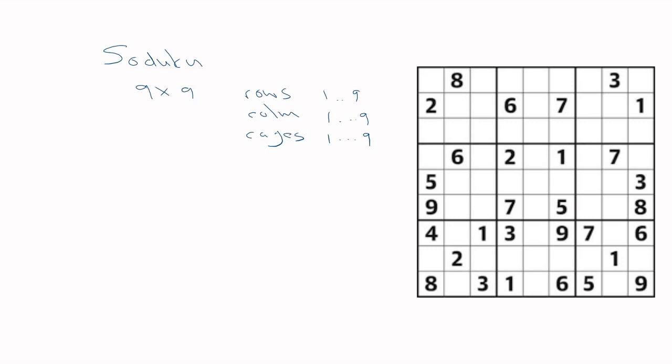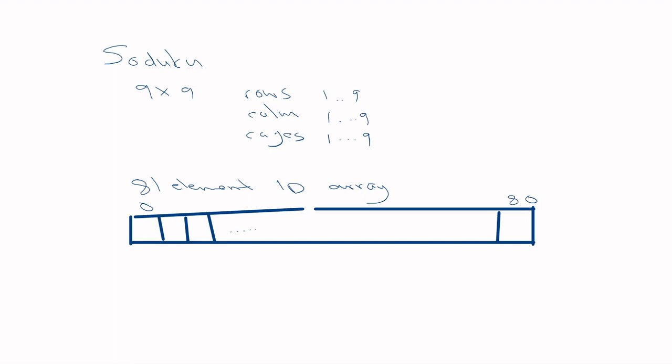If you're given a specific sudoku puzzle and want to evolve a solution, you can represent it as a simple 81-element one-dimensional array — since it's a nine-by-nine grid you spread it out as one big array from index zero to 80. Each element contains a value from one to nine. This is a multi-constrained problem: rows, columns, and sub-cages must all be one to nine.